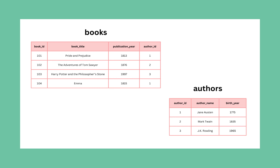Here, if you see, I have two tables — one is 'Book' and one is 'Authors'. In the Book table, I have a column called Author ID. This Author ID is a foreign key that is pointing to the Author ID present in the Authors table as a primary key. This is how we build a relation between two tables.